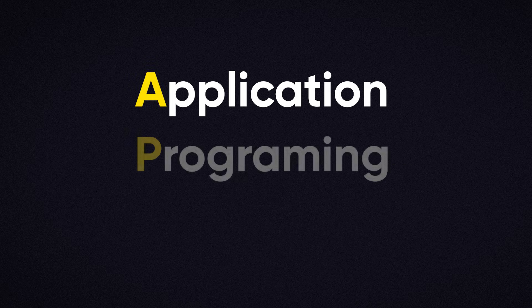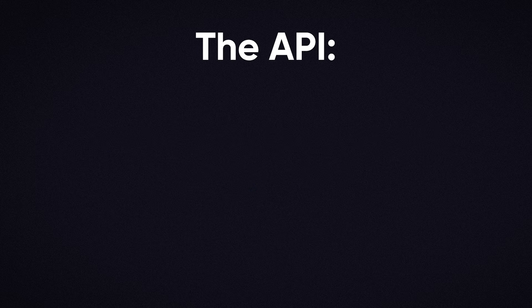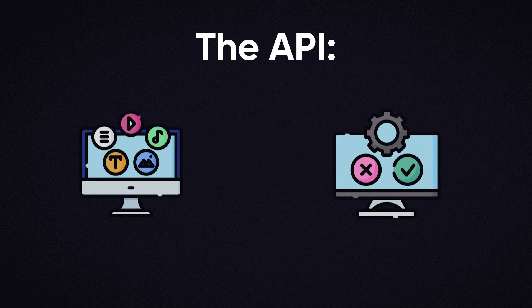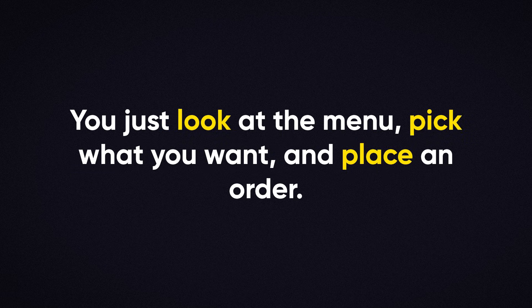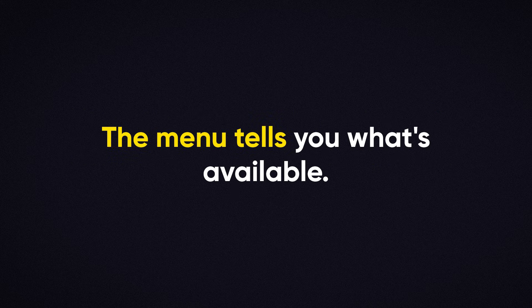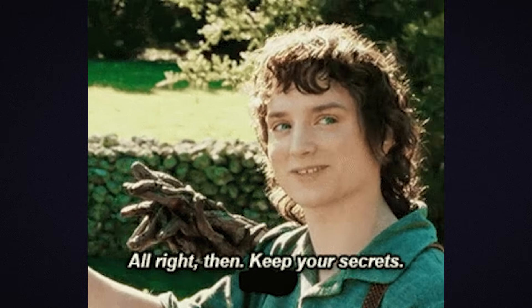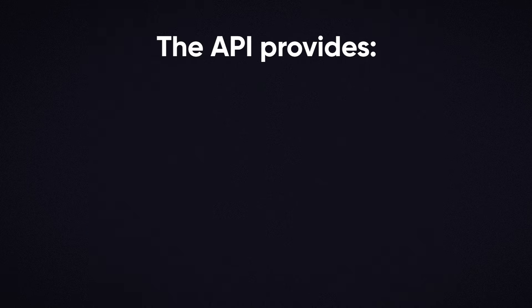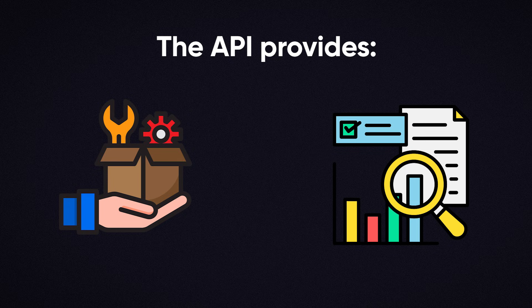API stands for Application Programming Interface. That sounds complicated, but it's actually pretty simple. An API is just a way for different software applications to talk to each other. Think of it like a menu at a restaurant. When you go out to eat, you don't need to know how the kitchen prepares your food. You just look at the menu, pick what you want, and place an order. The menu tells you what's available and what you can ask for, but it doesn't reveal all the behind-the-scenes details of how your meal is made. In the same way, an API provides a list of available services or data that one program can request from another without needing to know the internal workings of that system.